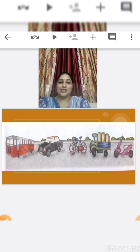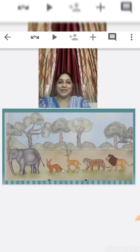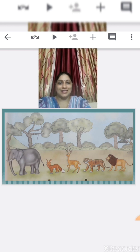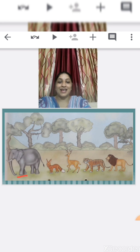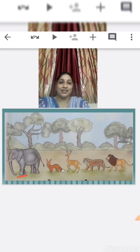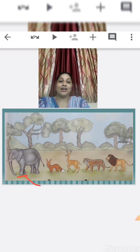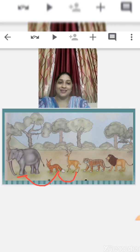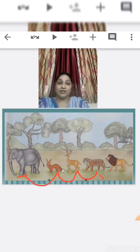Teacher will show you some more pictures. Tell me children, what are these? Yes, these are wild animals. Which animal is first in a row? Yes, an elephant. What comes after an elephant? A fox. After fox, a deer. After deer, a tiger. After tiger, a lion.